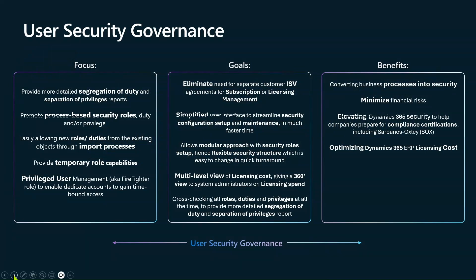As part of USG, we have key focuses, goals, and benefits. Our focus is to provide more detailed segregation of duty and separation of privilege reports, promote process-based security roles, easily allow new role duties from existing objects through an import process, provide temporary role capabilities, and privileged user management. Our goals are to eliminate the need for separate custom ISV agreements for subscription or license management, provide a simplified user interface to streamline security configuration setup and maintenance in much faster time, allow a modular approach with security role setup, and hence a flexible security structure which is easy to manage and easy to change with quick turnaround.